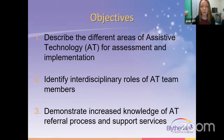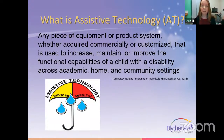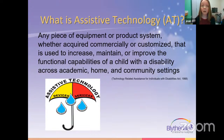Let's go over some objectives for this session. We want you to describe the different areas of assistive technology for assessment and implementation, identify interdisciplinary roles of AT team members, and demonstrate increased knowledge of the AT referral process and supportive services. Assistive technology is a large term that encompasses so many different things — any piece of device or equipment, product system, whether acquired commercially or modified, that is used to increase functional capabilities of a person with a disability across a variety of contexts.